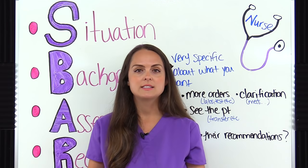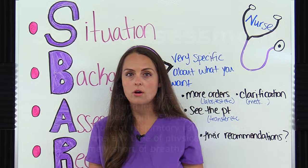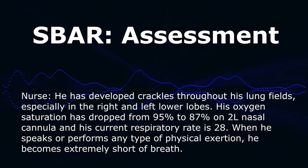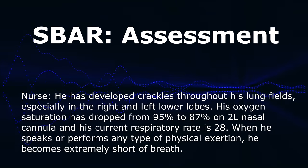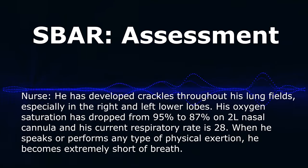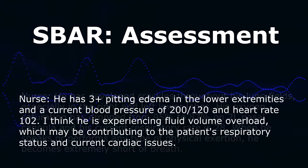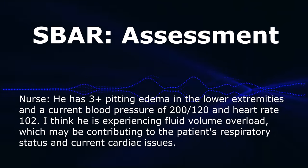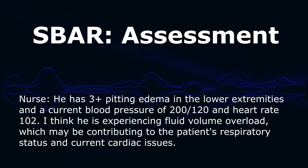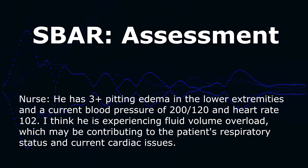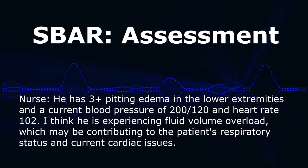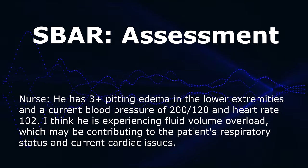Then go into the Assessment — what you have found and what you think is going on with the patient. 'He's developed crackles throughout his lung fields, especially in the right and left lower lobes. His oxygen saturation has dropped from 95% to 87% on two liters nasal cannula, and his respiratory rate is 28. When he speaks or performs any physical exertion, he becomes extremely short of breath. He also has 3+ pitting edema in his lower extremities, a current blood pressure of 200 over 120, and his heart rate is 102 in regular sinus tach. I think he's experiencing fluid volume overload, which may be contributing to his respiratory status and current cardiac issues.'